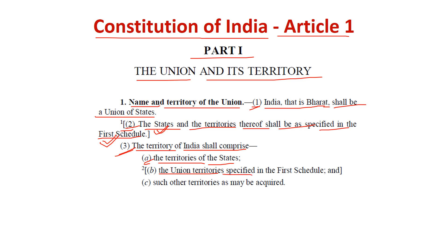The union territories specified in the First Schedule, and such other territory as may be acquired. So if India has acquired any other territory and it is now a part of India, that also comes into the territory of the state.